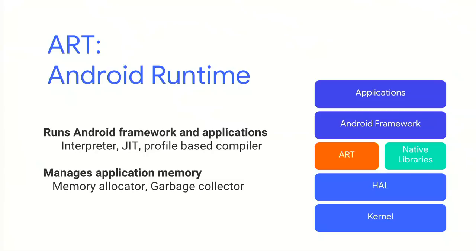So what is ART? ART is the software layer in between the applications and the operating system. It provides mechanisms for executing Java language and Kotlin applications. To accomplish this, ART does two things. It executes DEX files, the intermediate representation of Android applications, through a hybrid model consisting of interpretation, just-in-time compilation, and profile-based ahead-of-time compilation. ART also does memory management through automatic reclamation via a concurrent compacting garbage collector, so that there is less jank for your applications.